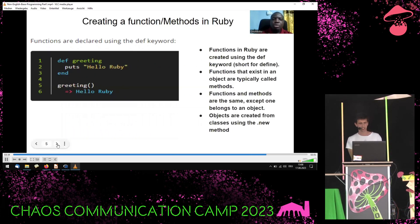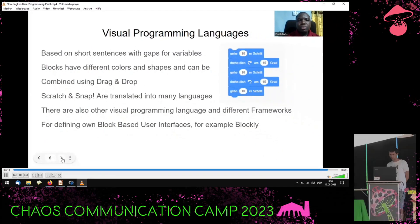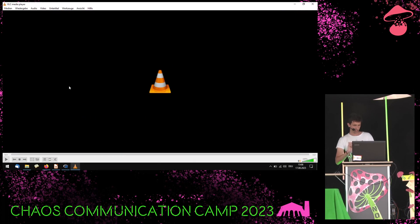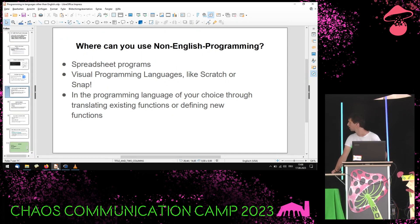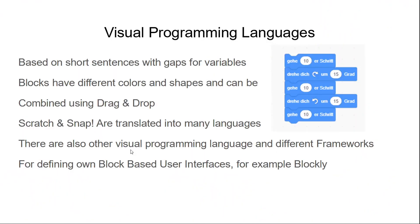Here you can see how to define a function in Ruby. There is also the 'def' keyword used. You write 'def' followed by the function name, then the code to be executed on the next line, and afterwards 'end'. Now the next topic I will talk about live is visual programming languages.